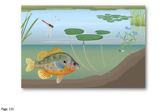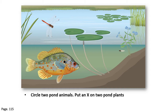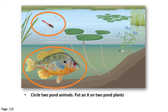Let's move to page 115 in our science book, where we are going to solve this exercise together. They are asking us to circle two pond animals. We will circle the dragonfly and the fish. In the second part of this question, they are asking us to put an X on two pond plants. We will put an X on the water lilies and another X on the beautiful flower on the side of this pond. Well done, everybody.